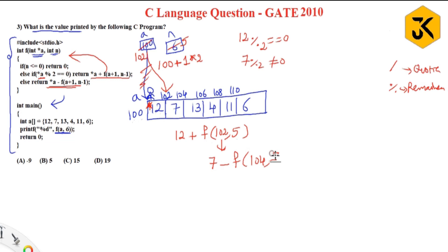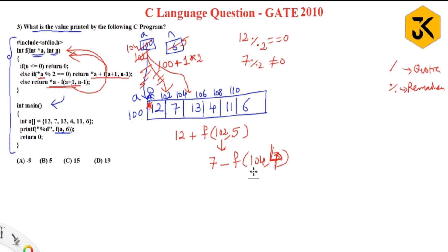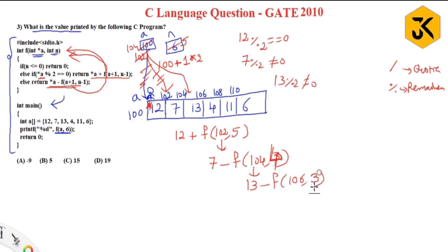Now a is 104, n is 4. f(104, 4) is called. Is n <= 0? No. Star a is 13. Is 13 % 2 == 0? No, it is not equal to 0. So it goes to the else case: return 13 minus f(a+1, n-1), which is 13 minus f(106, 3).